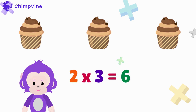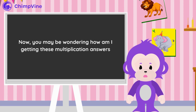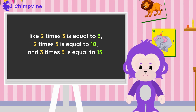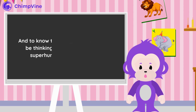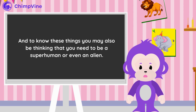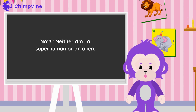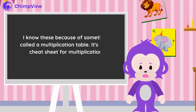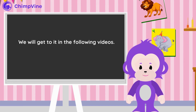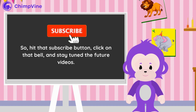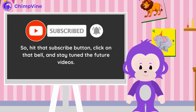How easy is it when you multiply rather than count? Now you may be wondering how I'm getting these multiplication answers — like two times three equals six, two times five equals ten, and three times five equals fifteen. Am I a superhuman or an alien? No, neither am I a superhuman nor an alien. I know these because of something called a multiplication table. It's like a cheat sheet for multiplication — it contains all the solutions for any multiplication problem. We will get to it in the following videos, so hit that subscribe button, click on that bell, and stay tuned.